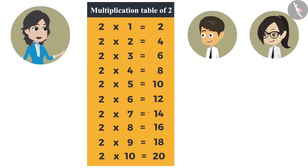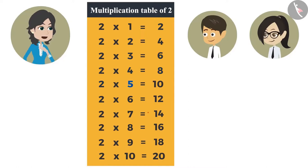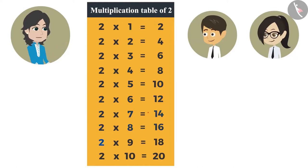We remember the table of 2 like this: 2×1 is 2, 2×2 is 4, 2×3 is 6, 2×4 is 8, 2×5 is 10, 2×6 is 12, 2×7 is 14, 2×8 is 16, 2×9 is 18, 2×10 is 20.